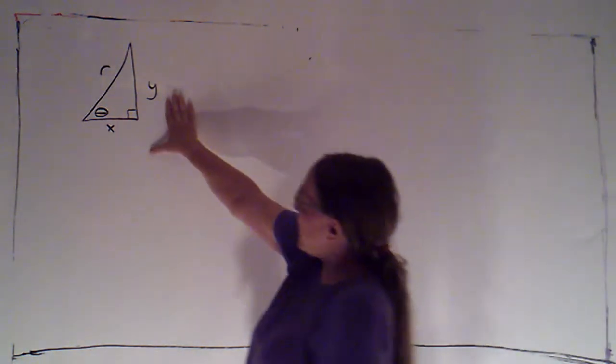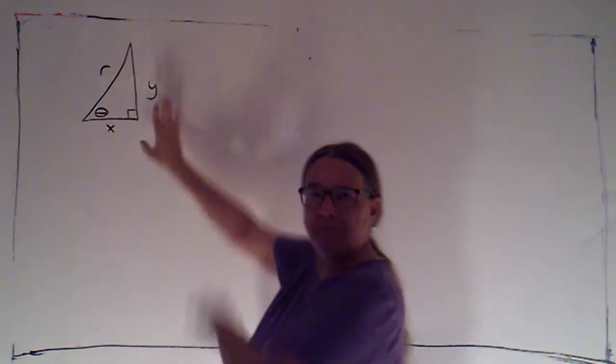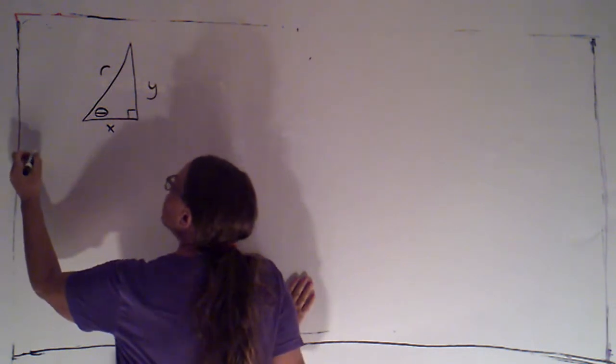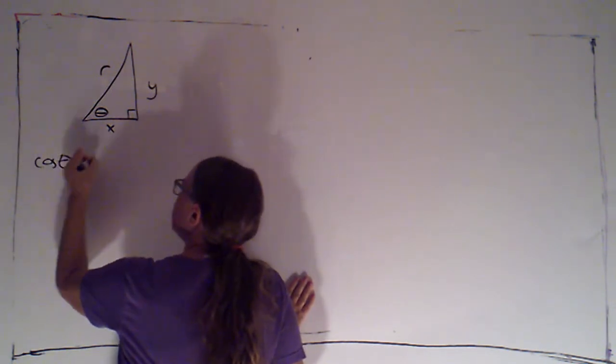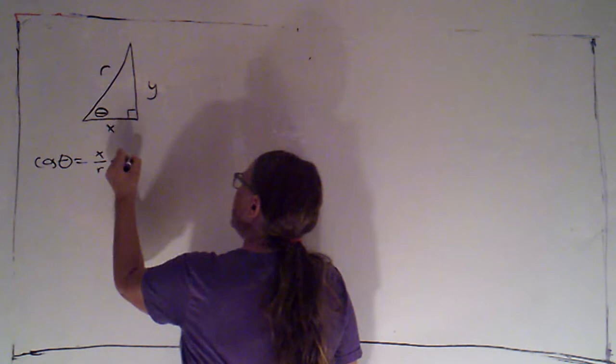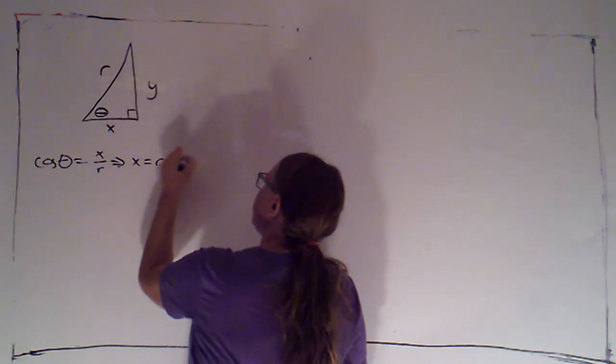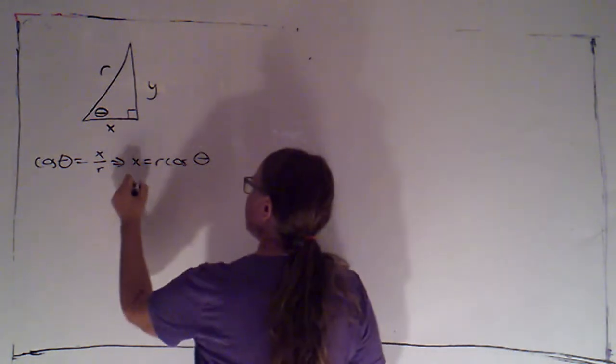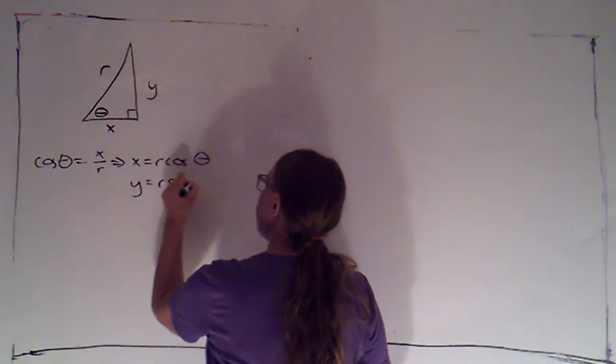So I've got up here on the board this triangle that helps me to remember my conversion formulas. Let's just remind ourselves what those are. Since cosine of theta is x over r, I know that x is r cosine theta. A similar argument will give me that y is r sine theta.